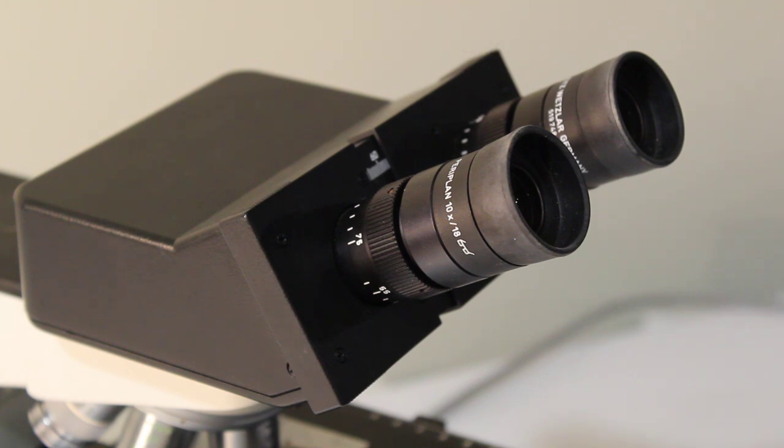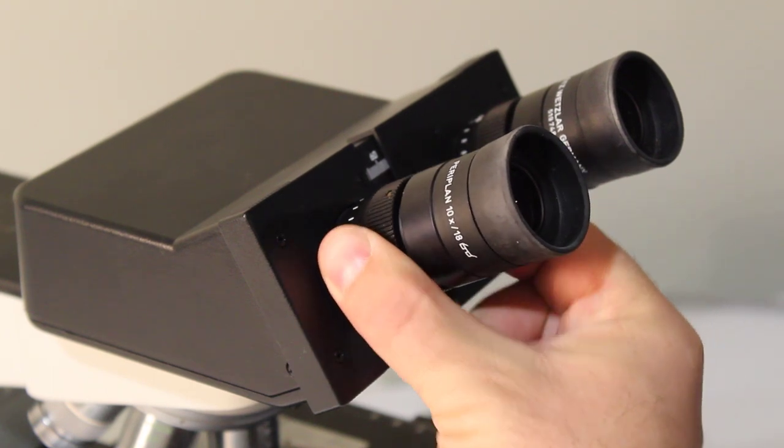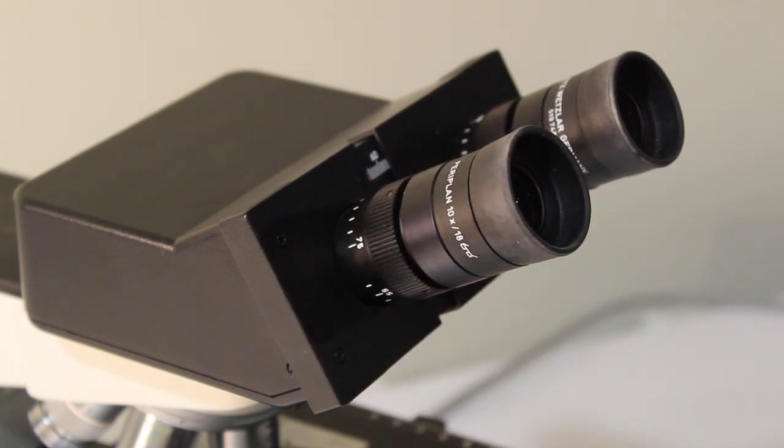If you have a binocular head you may also have a diopter adjustment which is what these little ticks here are on the bottom. These are for people who wear glasses so that you don't need to wear them while you're working on the microscope.